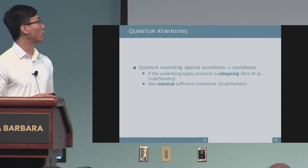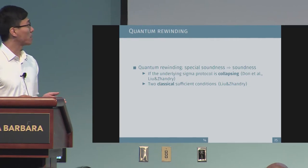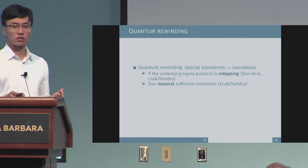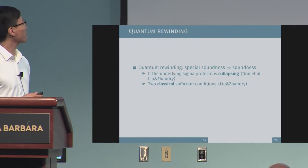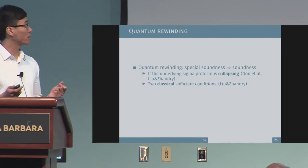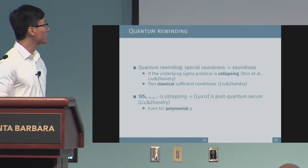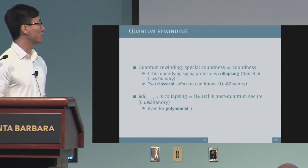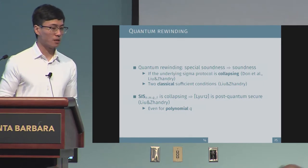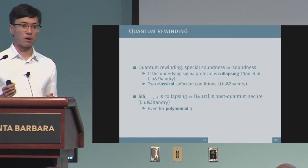We give a definition called collapsing, which is a property for a Sigma protocol. As long as the Sigma protocol is collapsing, we can do quantum rewinding — in other words, it is a proof of knowledge or argument of knowledge. We also gave two classical sufficient conditions which imply a Sigma protocol is collapsing. We prove that the Lyubashevsky signature satisfies collapsing, which means the Lyubashevsky signature is post-quantum secure, and this holds even for polynomial Q — meaning we don't need large parameters, just slightly bigger ones.